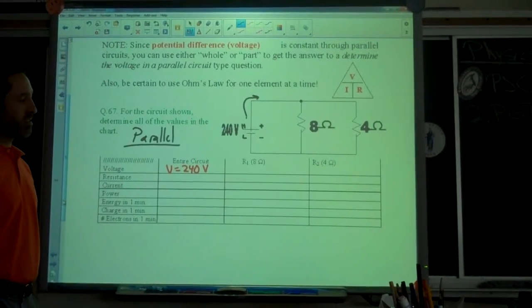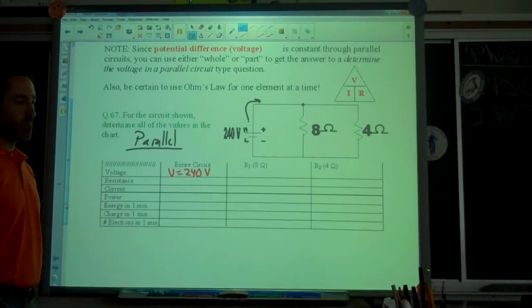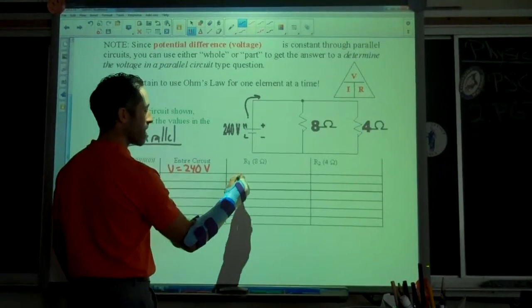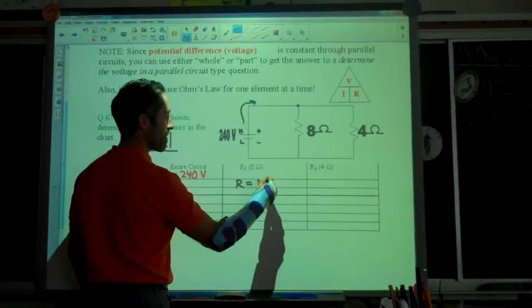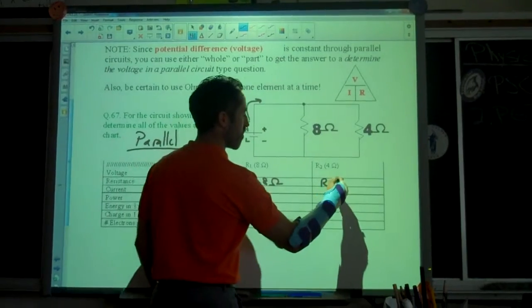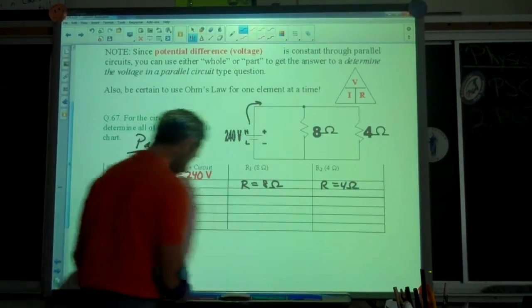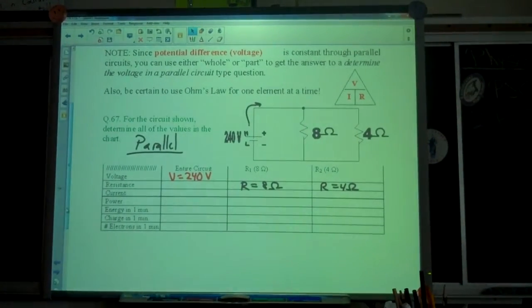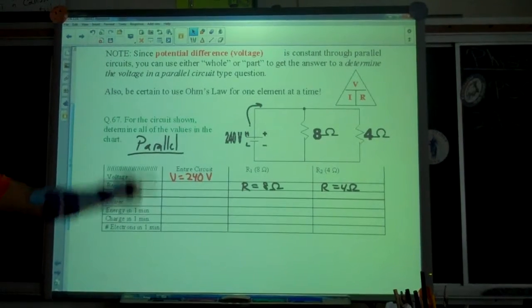You know the individual resistors. This resistor is an 8 ohm resistor. This resistor is a 4 ohm resistor. Now we're ready to go. That's all we need and we can actually handle everything in this chart.